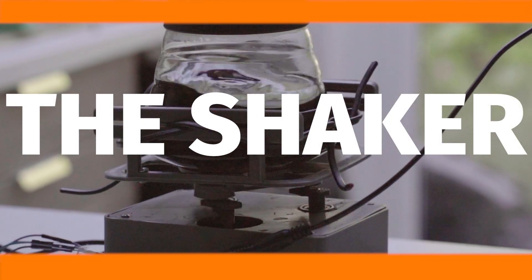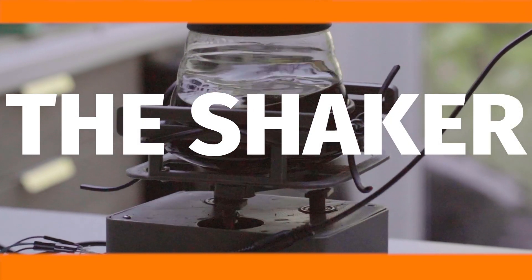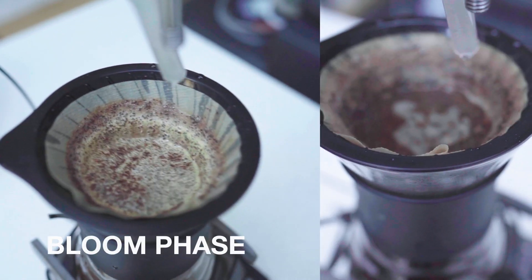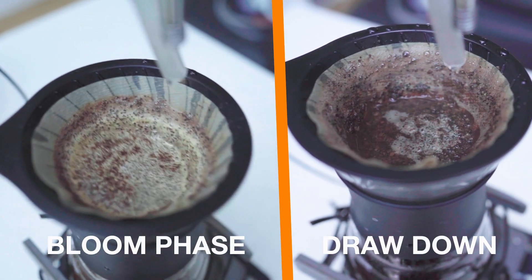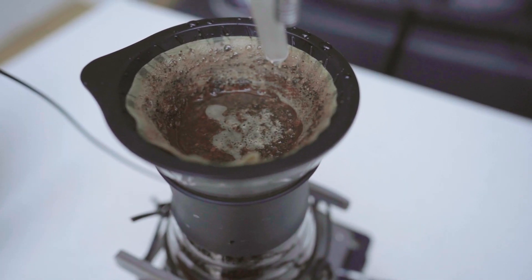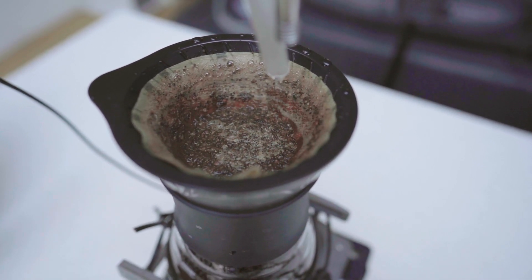Next up, we've got the shaker which allows us to swirl the V60 carafe so that we have that nice bloom at the beginning and also closer to the end we can perturb the bed of the coffee so we have a nice flatbed at the end of the drawdown.